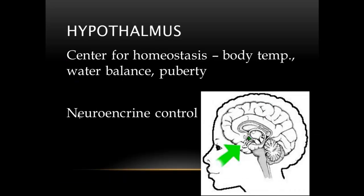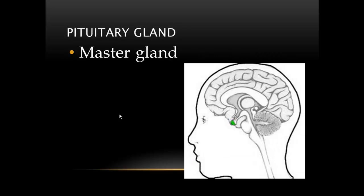So hypothalamus, really important center for homeostasis, the regulation of our body temperature, our water balance, our blood pressure, when we go through puberty, when we ovulate, all these things are going to be controlled through the hypothalamus, and it is the neuroendocrine center, meaning it's going to be the connection between the nervous system and the endocrine system. And it's going to control the pituitary gland, which resides right below it.